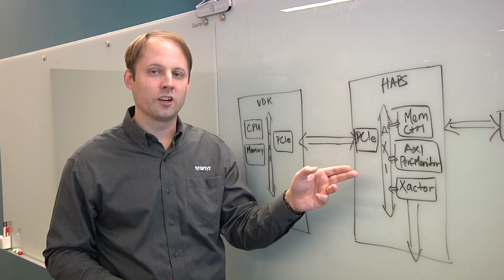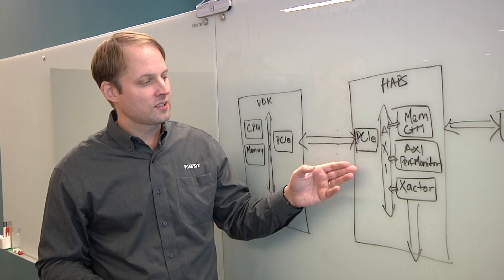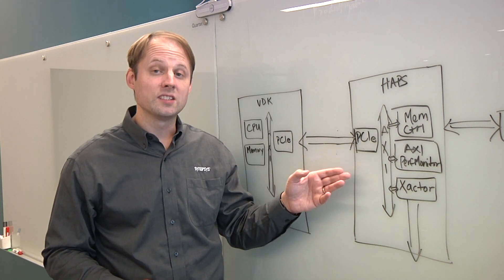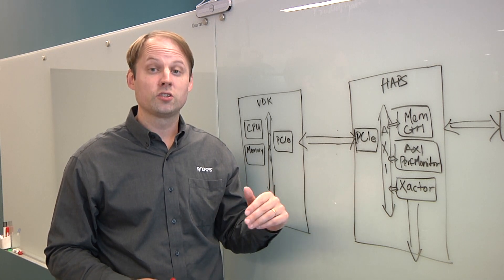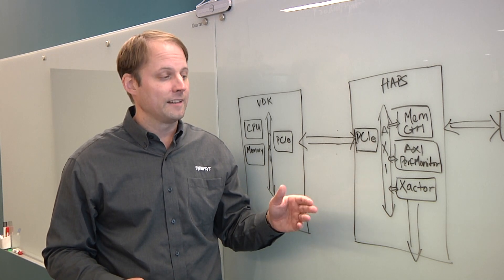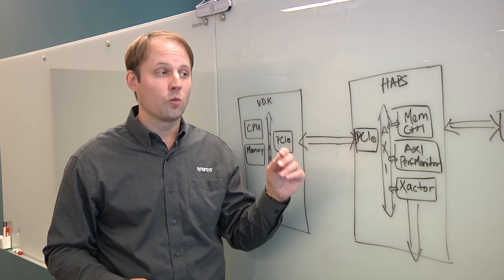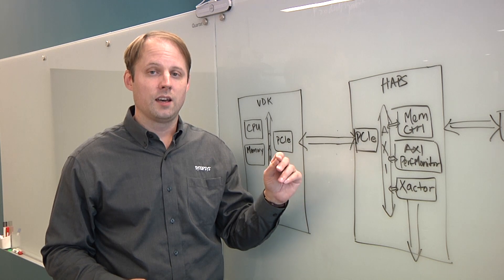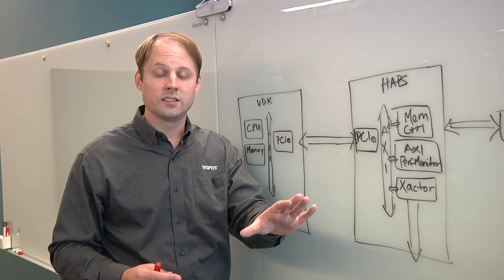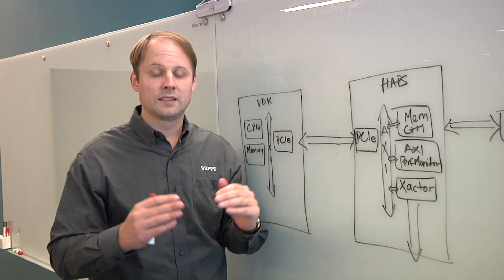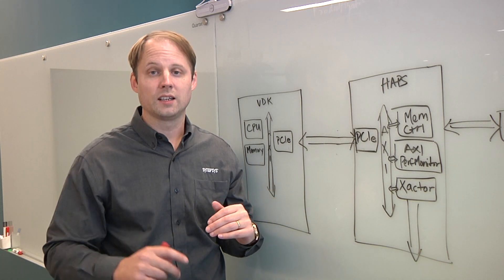That gives me an indication of where my bottlenecks are in the design. What I also have on this HAP system is the deep trace debug. That works in the way that during compile, you select your signals of interest. Then at runtime, you can select your trigger event. Once that's triggered, your signals of interest get offloaded into a DDR memory, and that data you later use to recreate your waveforms for analysis.